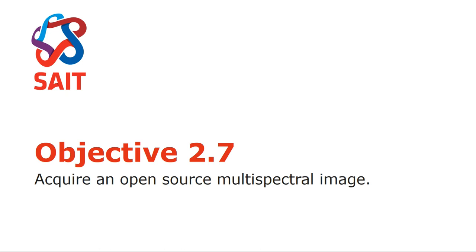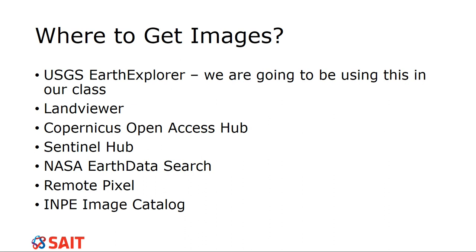All right, so acquiring a multispectral image. I am going to try to go through this relatively fast because you're going to have another video that actually shows this step-by-step with the software. I'm just going to go through these steps in a verbal way. So where can you get free images, open source images? Well, there's the USGS Earth Explorer, and that's what we're using. There's Land Viewer. There's the Copernicus Open Access Hub. There's Sentinel Hub. There's NASA Earth Data Search. There's the Remote Pixel. There's the IMP image catalog. There's all, and there's more. There's so many more than like GeoGratis. There's like all kinds of stuff. And sometimes they're there and then they disappear and they move on to other things. So we're going to use Earth Explorer because that's currently kind of the go-to place for Landsat data.